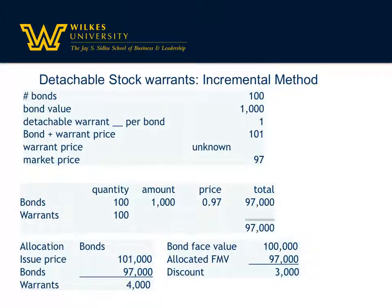Using the same setup: 100 bonds, each priced at $1,000 and sold at a market value of $97,000 if sold separately without any warrants, totaling $97,000 as the known price. If we're issuing things for $101,000 and we know the bonds are at $97,000, then the warrant has to be $4,000. But remember, the bond has a face value of $100,000 and a market value of $97,000, which means there's a $3,000 discount on bonds payable that we have to keep into account.